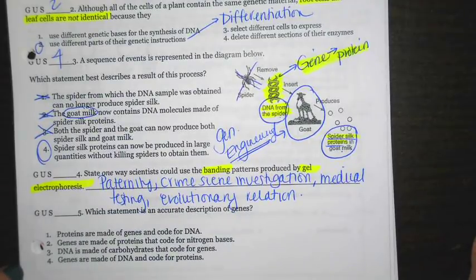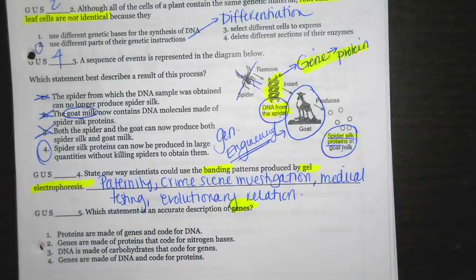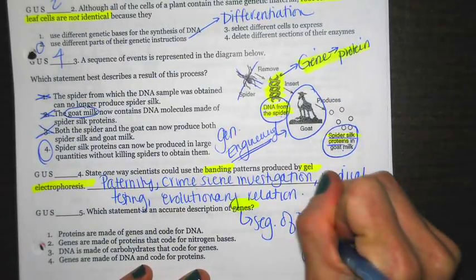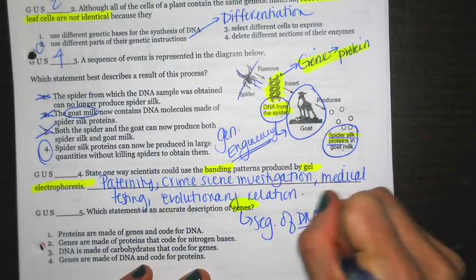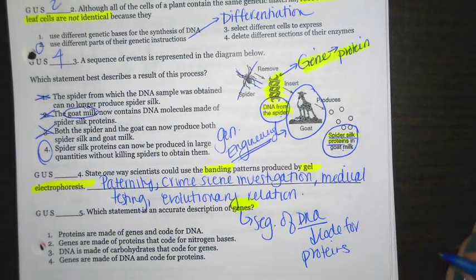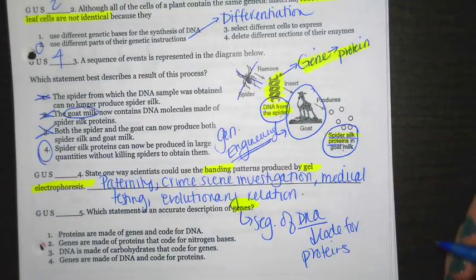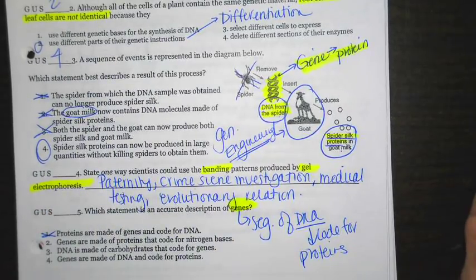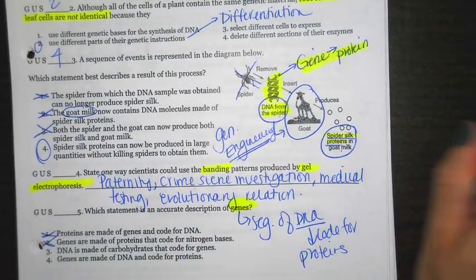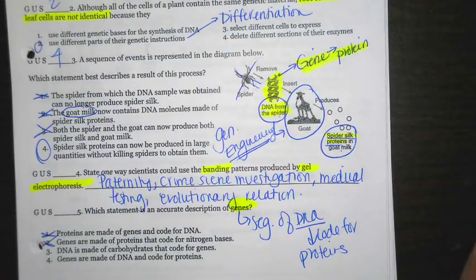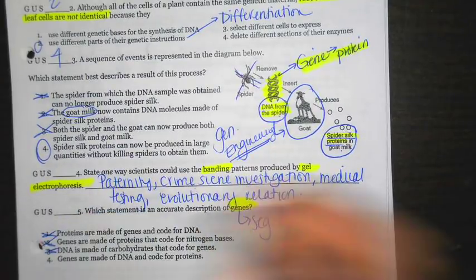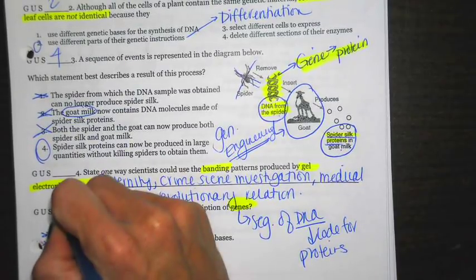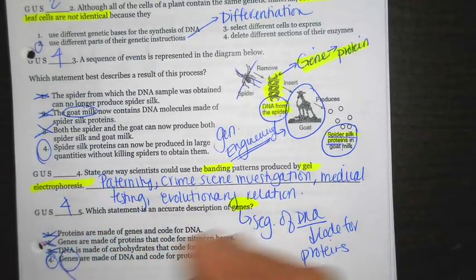Which statement is an accurate description of genes? So here are the genes. Remember, genes are segments of DNA. Remember, DNA is going to code for proteins. Number one says proteins are made of genes and code for DNA. No. Genes, right, are part of DNA and they code for proteins. Genes are made of proteins. No. That's not correct. Because genes code for proteins. They are not made of proteins. Number three says DNA is made of carbohydrates. Definitely incorrect, right? DNA is made up of genes and that's going to code for a protein. Last one says genes are made out of DNA and they code for proteins. That is going to be correct. Again, genes are segments of DNA.